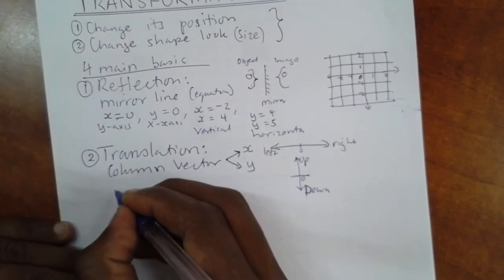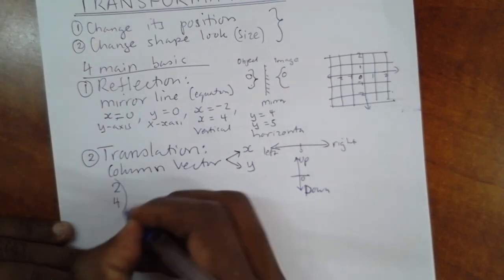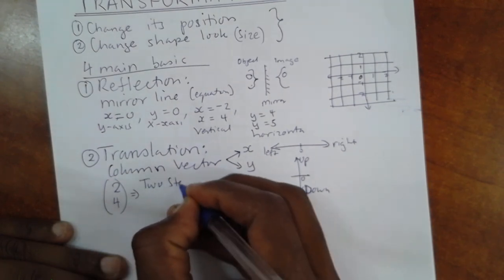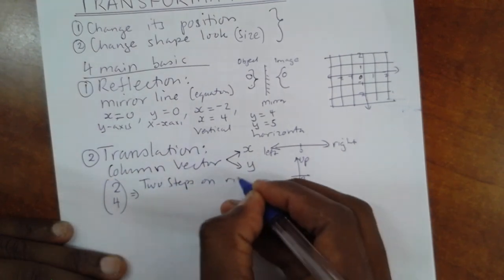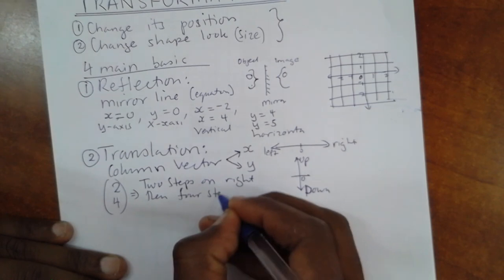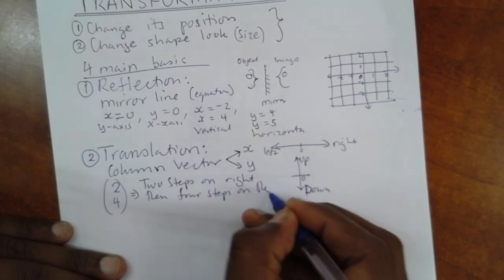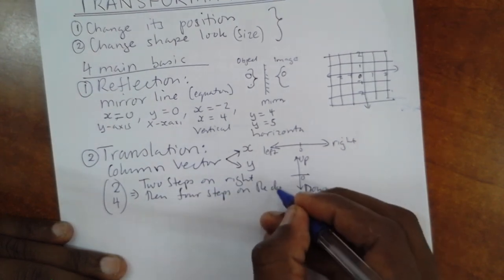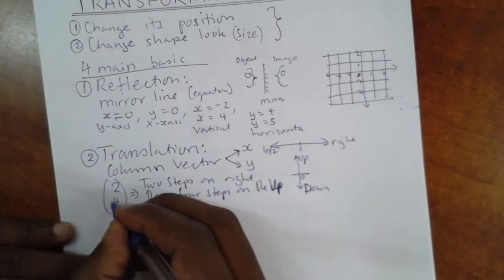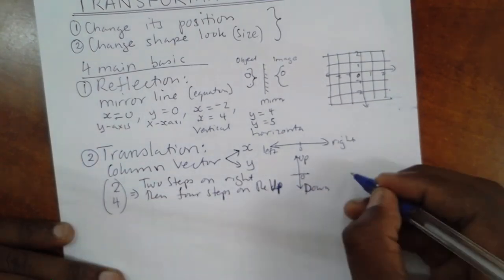In case I write two, four, this means two steps on the right, then four steps on the up. Why up? Because it's a positive and it's positive.